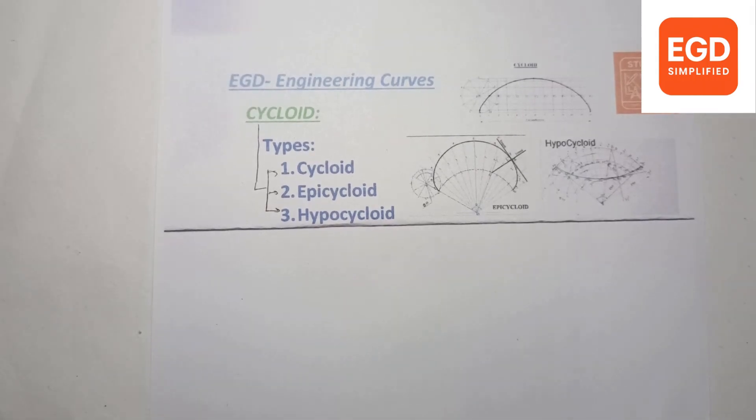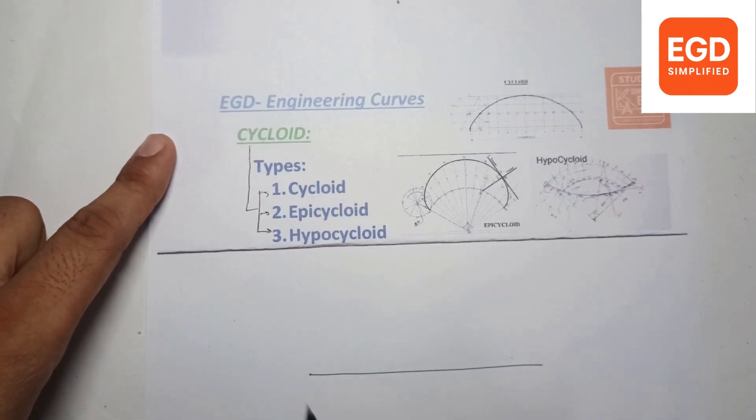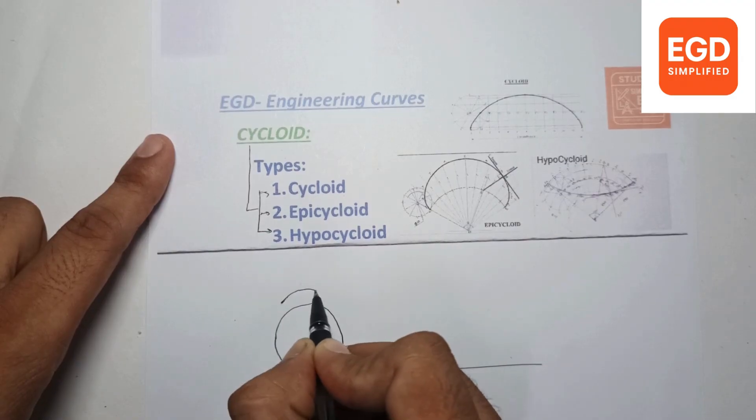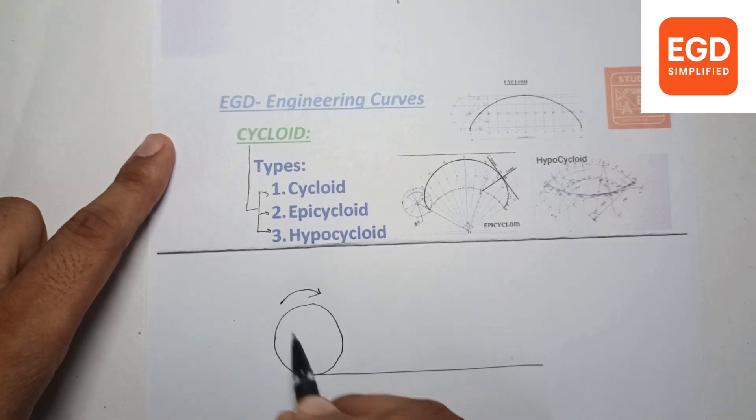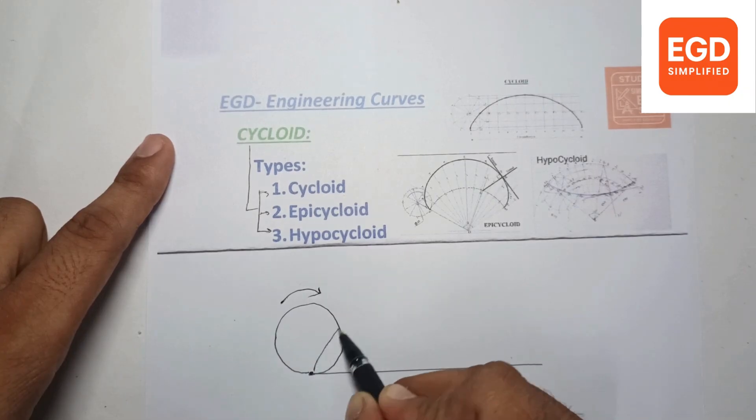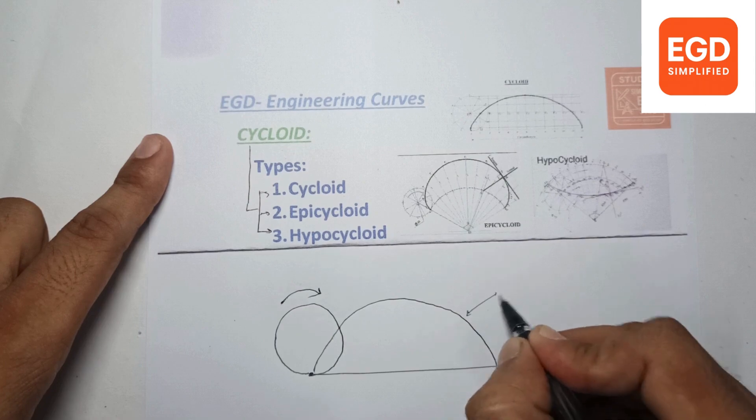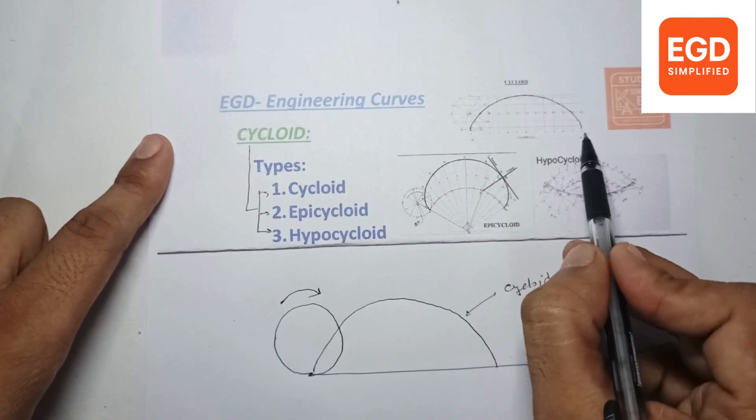Now what is cycloid? Suppose there is a flat surface and a circular entity rolling over it without slipping. If we track the path of any one point for one revolution, the curve we get is called cycloid.